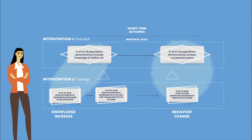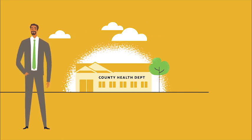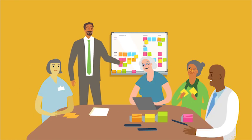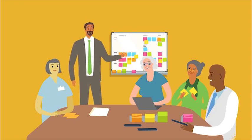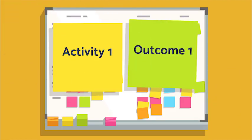Now let's check in with Jackson at the county health department to see how his training evaluation plan is progressing. After engaging additional stakeholders, Jackson and the work group conduct a logic modeling session to map out how they expect their home health aid intervention to unfold. They start by writing all the activities and intended outcomes on sticky notes and placing them on the whiteboard to show how they think the program will work.